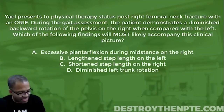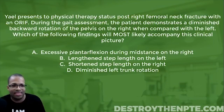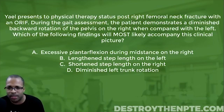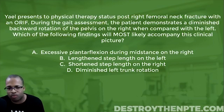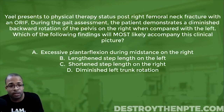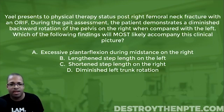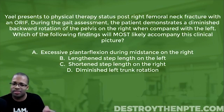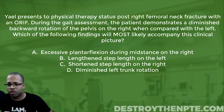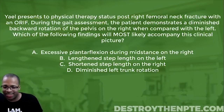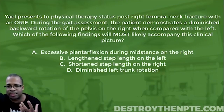Let's start at the top of the question. Jael presents to physical therapy status post right femoral neck fracture with an ORIF. During the gait assessment, the patient demonstrates a diminished backward rotation of the pelvis on the right when compared to the left. Which of the following findings will most likely accompany this clinical picture? I always used to get really flustered with gait questions until I started to break them down.